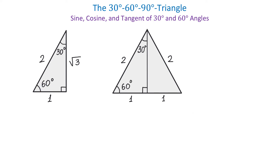The third side of this triangle will be square root of 3. So here we have the relationship between the three sides in a 30-60-90 degree triangle: if the shortest side is 1, then the hypotenuse will be 2 and the other side will be square root of 3. Once we have all three sides, we can find the values of sine, cosine, and tangent of 30 and 60 degrees.